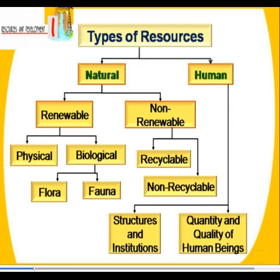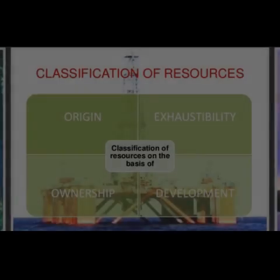Now let us study about types of resources. We have natural and man-made resources. Natural resources can be further classified into two types: renewable and non-renewable. Renewable resources can be physical and biological. Biological resources can be natural vegetation and wildlife. Non-renewable resources include recyclable things, for example metals, and non-recyclable things, for example fossil fuels. Then we have human resources, which include structures and institutions, as well as the quality and quantity of human resources.